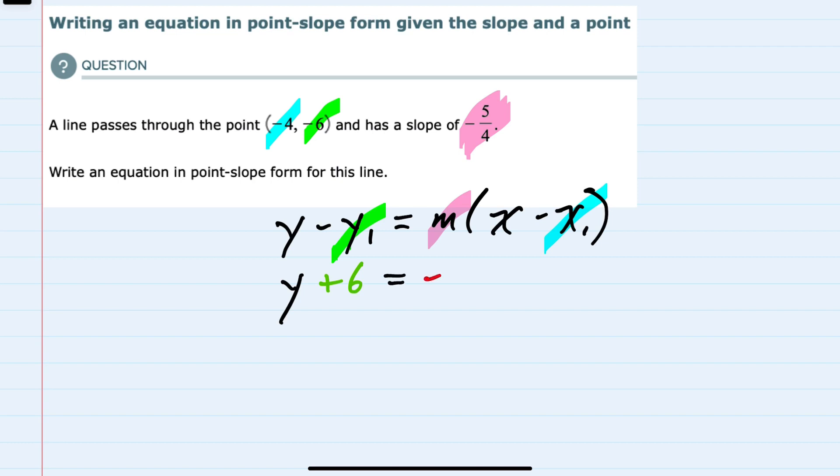which here is negative 5 fourths times x minus x sub 1. But again, our x sub 1 is negative 4, so it's minus a negative 4, or plus 4.